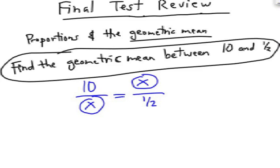In other words, the unknowns are diagonally across from each other and the two numbers you're taking the geometric mean of are the other diagonal.